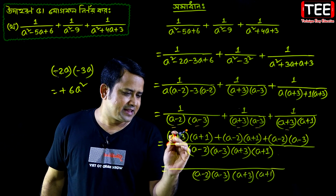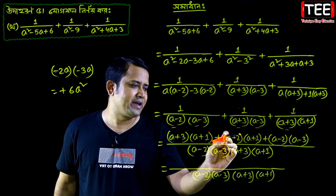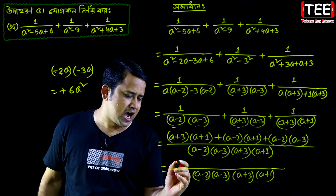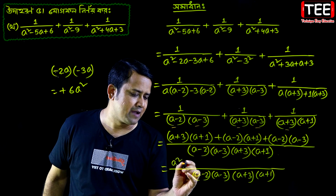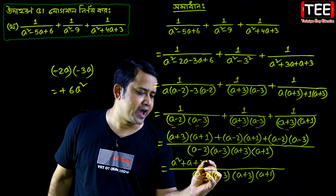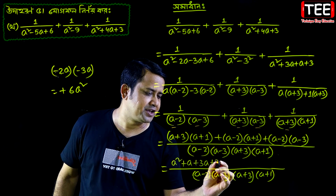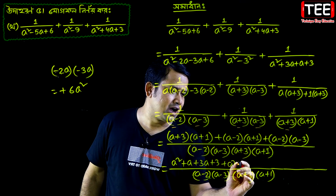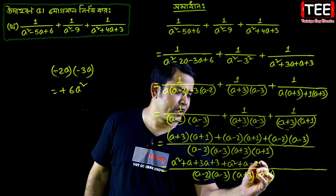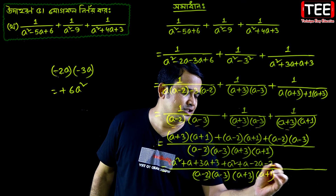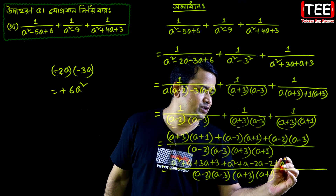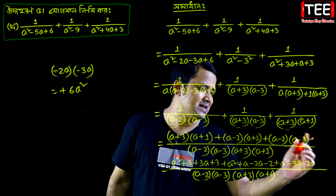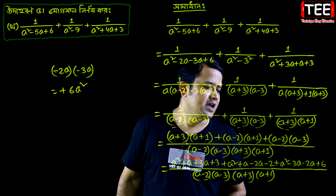3 times a gives plus 3a, 3 times 1 gives plus 3a, a minus 2 times a gives minus 2a, minus 2a, minus 3 times a gives plus 6.